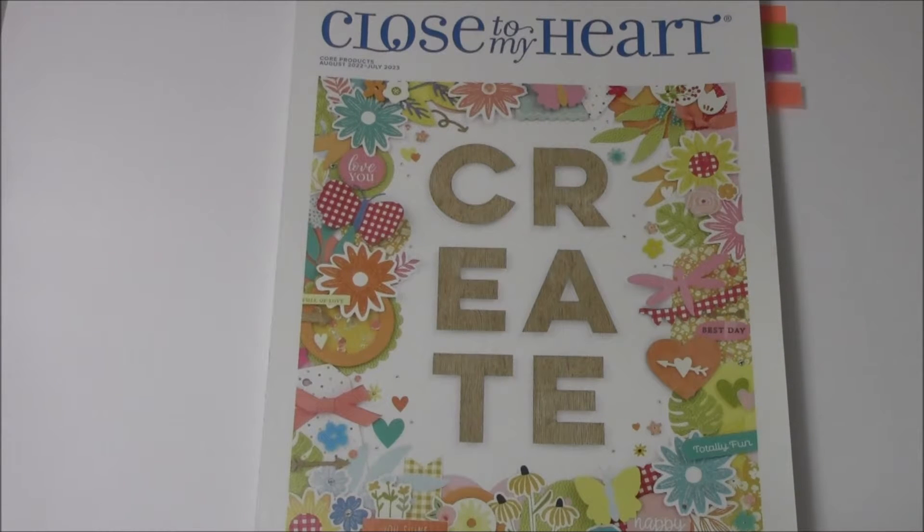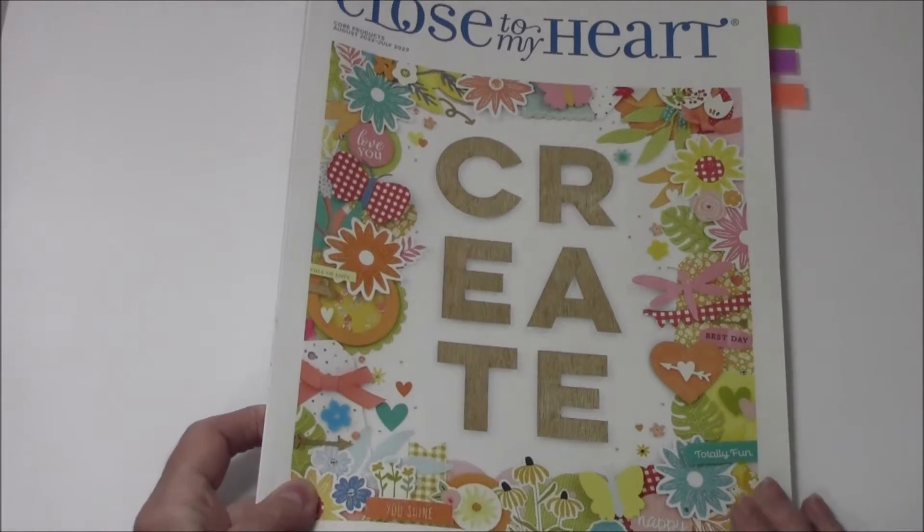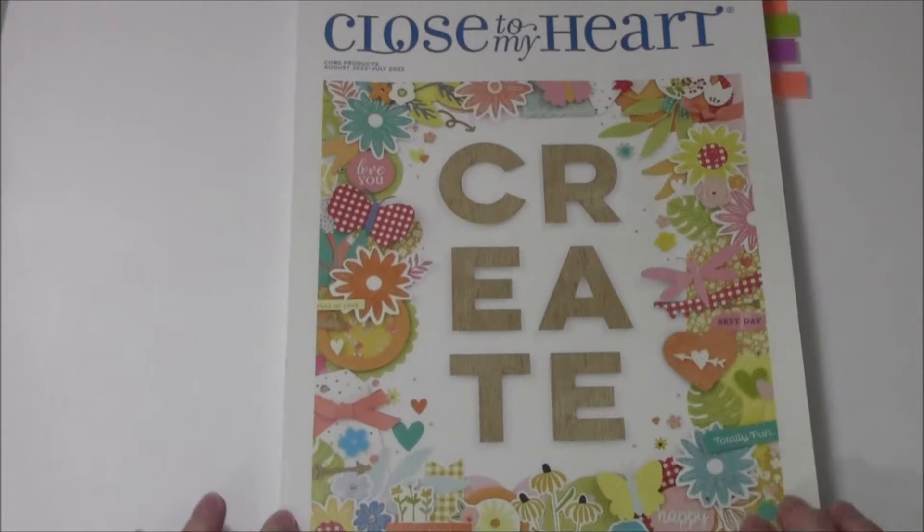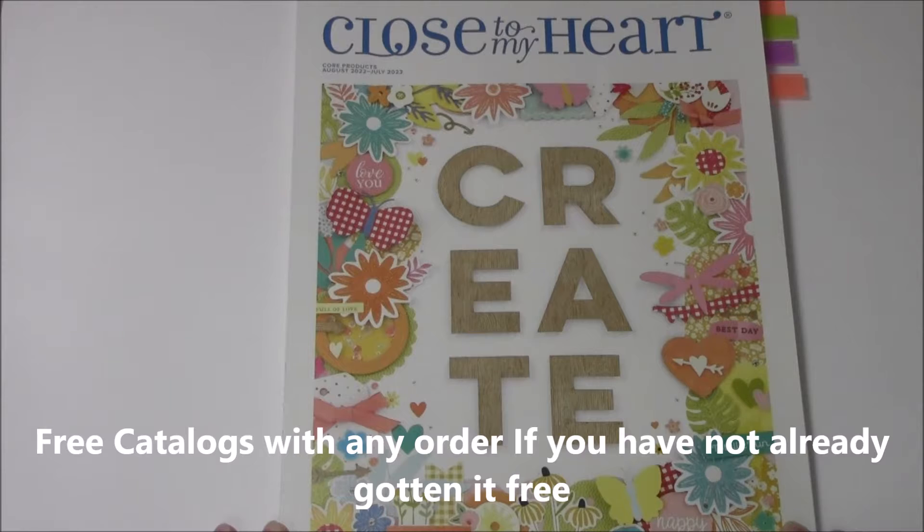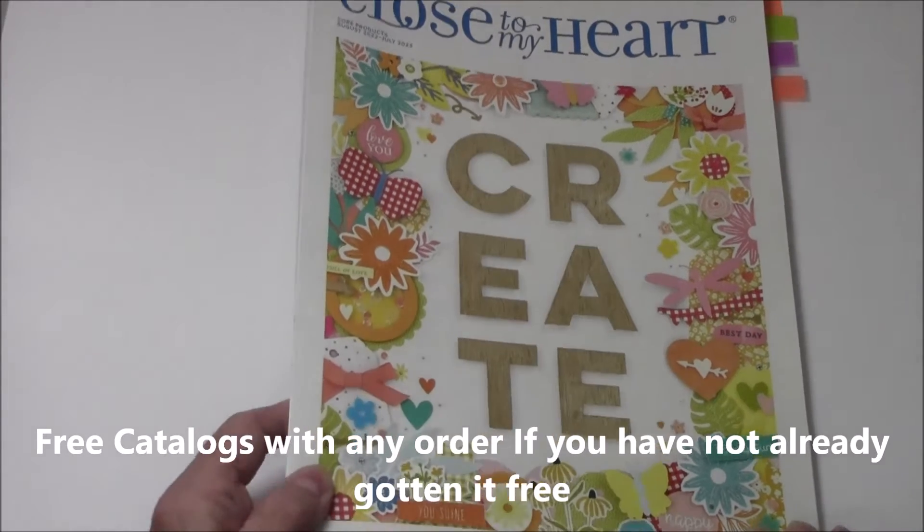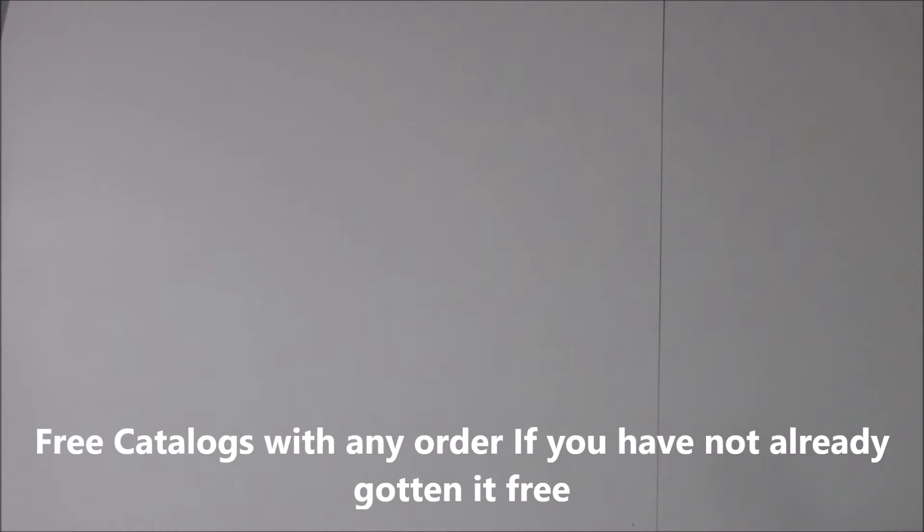Some of the items I've purchased out of the new core catalog, which is our once a year catalog. We have our smaller catalogs every three months now. This is the core one and if you place an order of any kind, you can get the core catalog and the July to September catalog for free with any order from Close To My Heart. I will put my website down there when I get this video done.